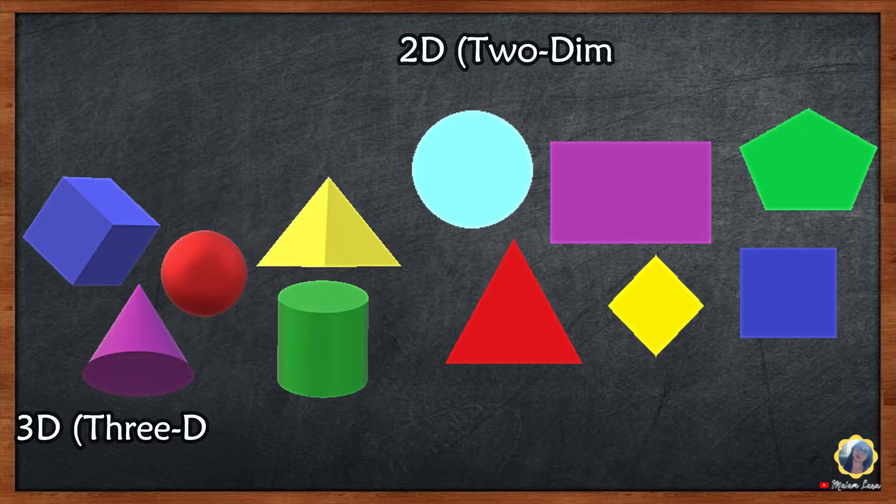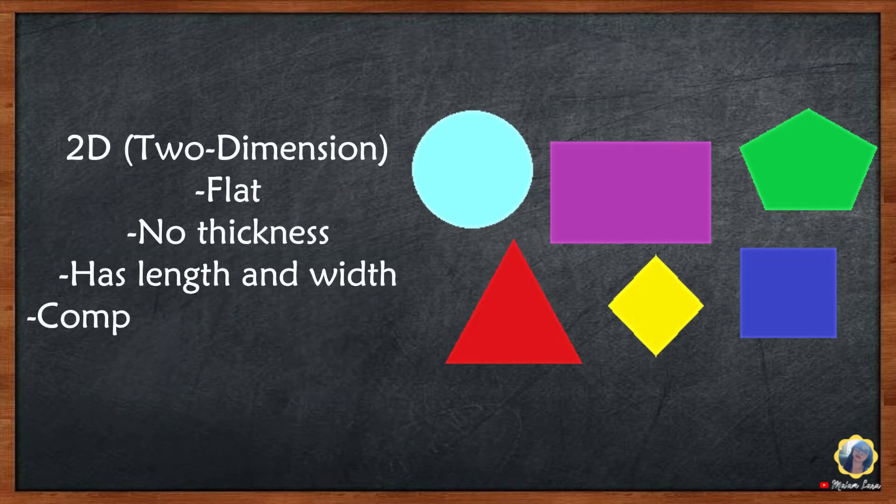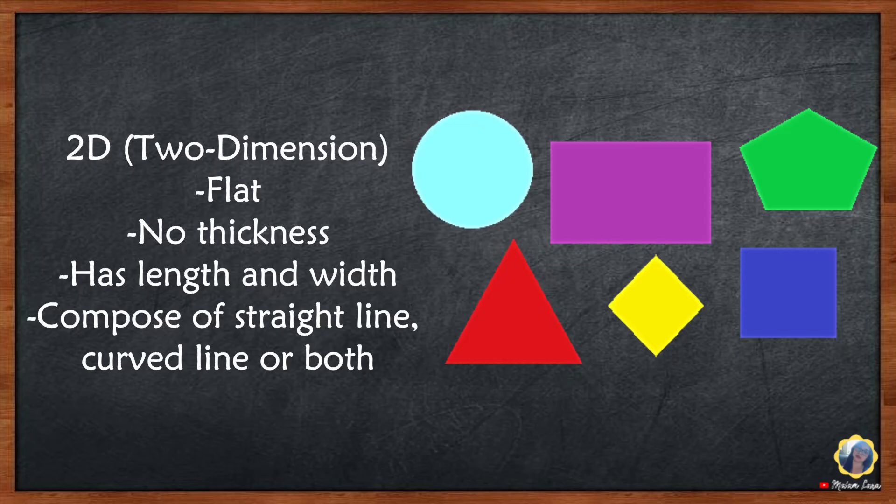Let us differentiate two-dimensional figures or plane figures from three-dimensional figures or solid figures. 2D is flat, no thickness, has length and width, and composed of straight line, curve line, or both.